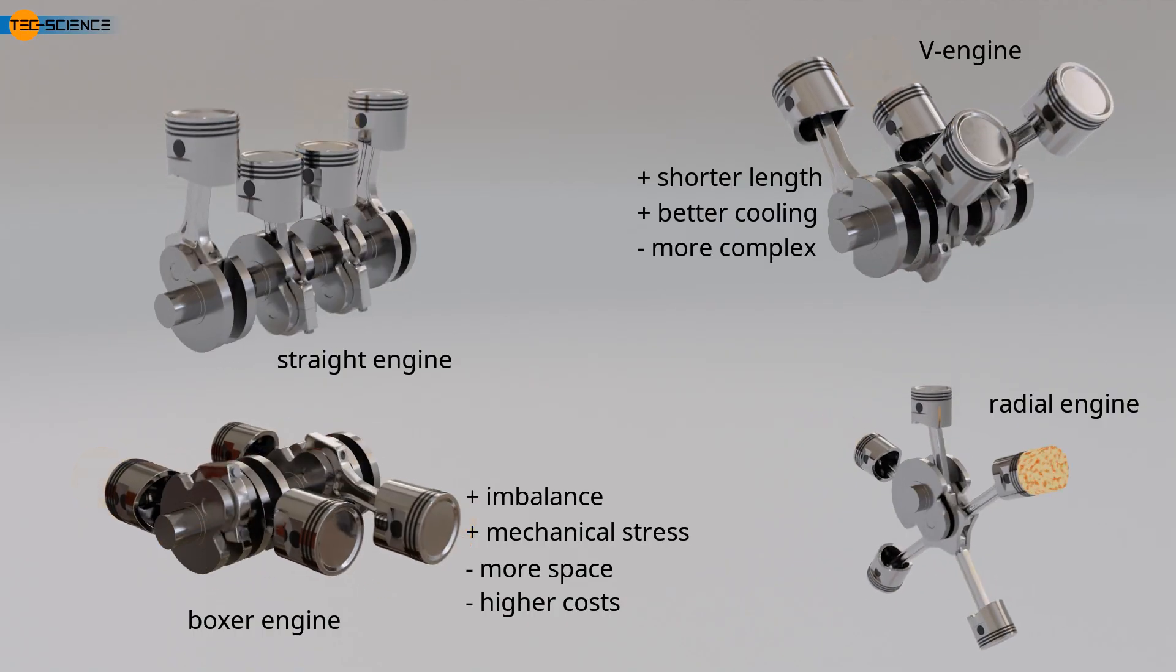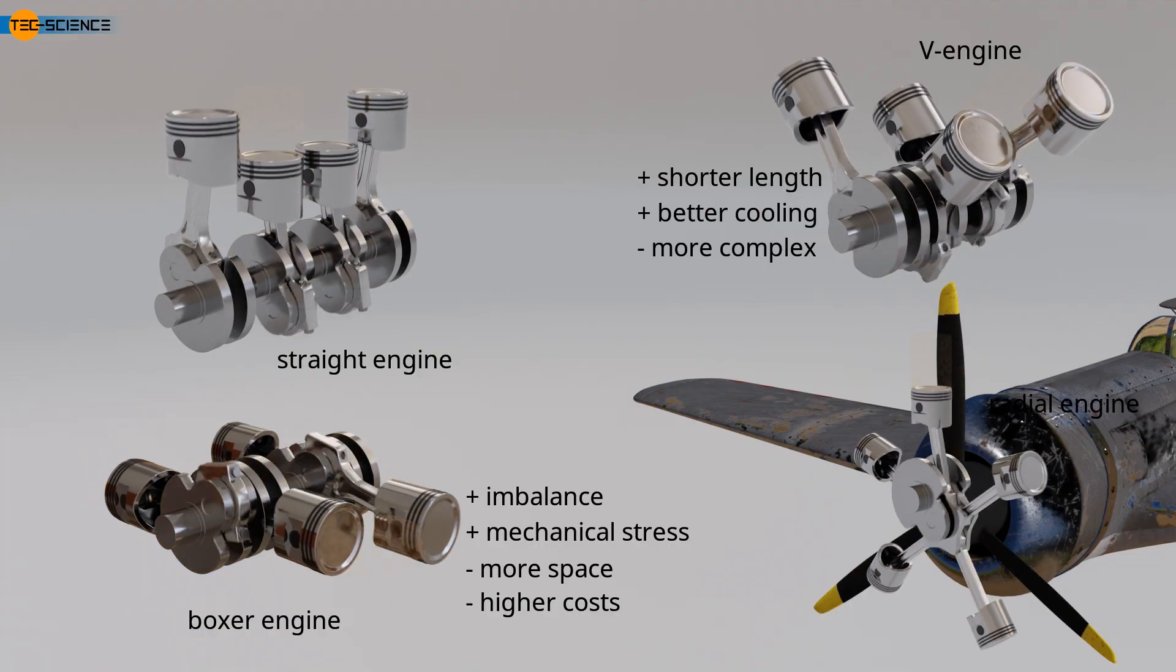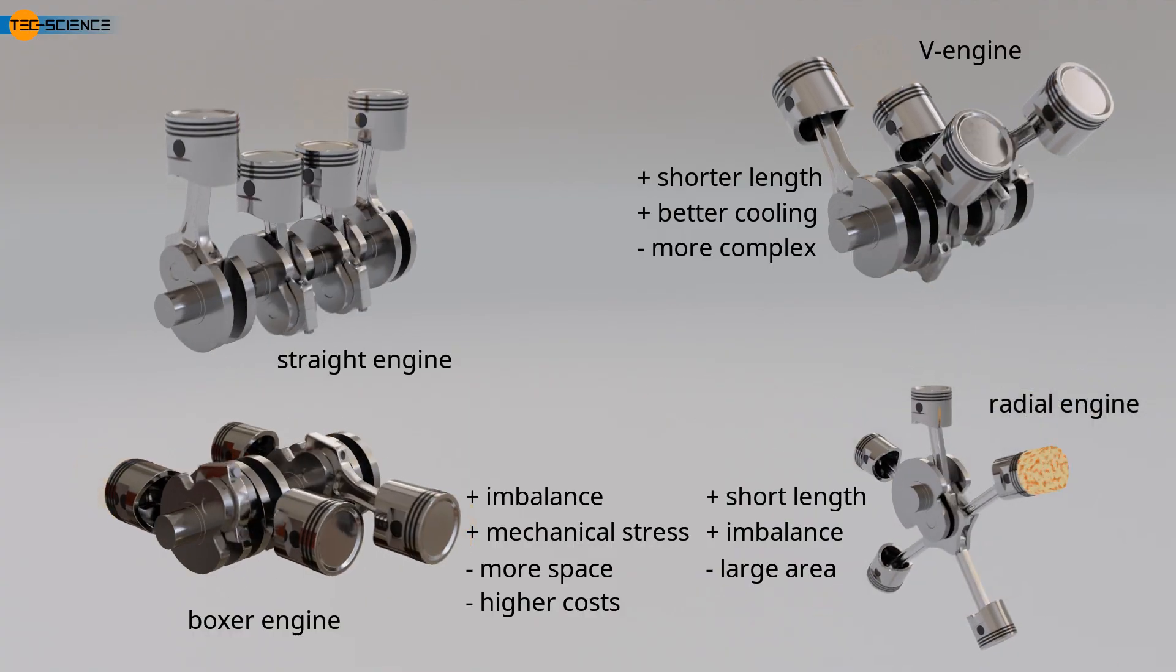Star engines are often used to drive propellers in aircraft. The advantage is their short overall length and the effective compensation of inertial forces. This reduces mechanical stress due to reduced vibrations, improving smoothness. A disadvantage is the large frontal area of the engine, which increases air resistance, especially with conventional air cooling. Additionally, the pipework for the intake of fresh charge and exhaust lines must be designed more complexly, which increases design effort and consequently, costs.